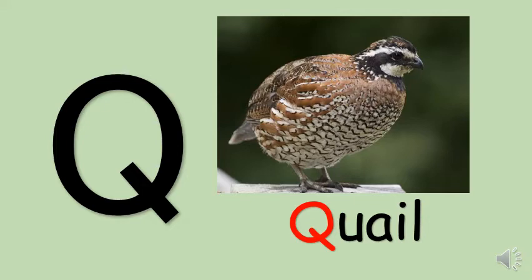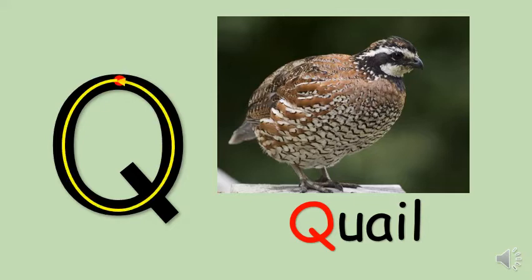To make a letter Q, start from the top, go all the way round to the left, like the letter O. Then go to the bottom and make a line down to the right.